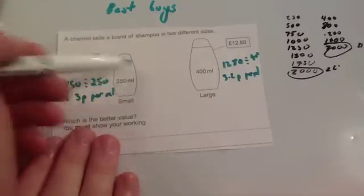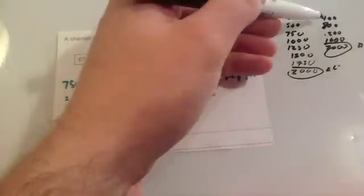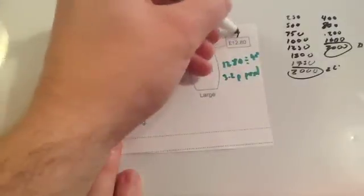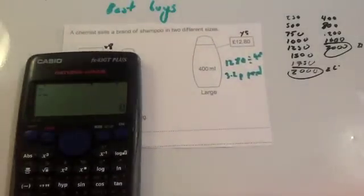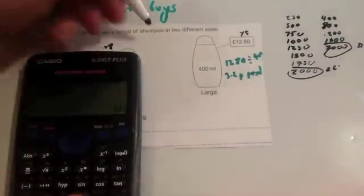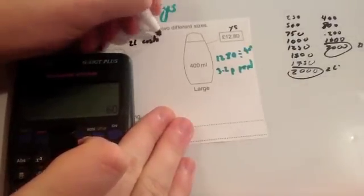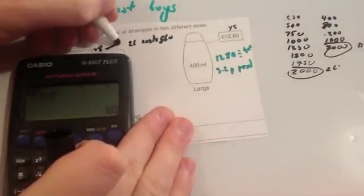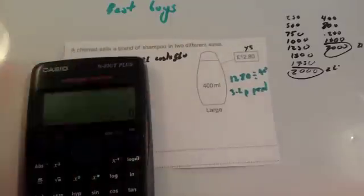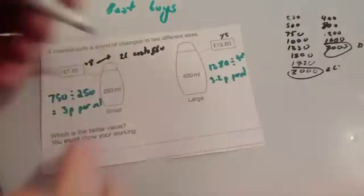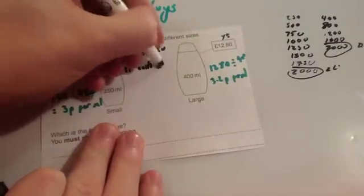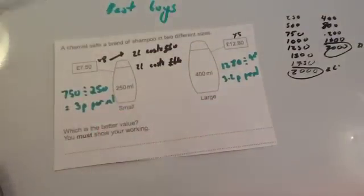To get 2 litres, you times this one by 1, 2, 3, 4, 5, 6, 7, 8. So times this price by 8, and this price by 5, and you'll get the cost for 2 litres using both options. So £7.50 times 8 equals £60. For 2 litres, it costs £60 using this option. Using this option, you would do £12.80 times by 5, and you find this one costs £64 for 2 litres. So again, this one's the best option. For this particular question, I think I would use the first method. I think it's a lot easier, or a lot quicker.